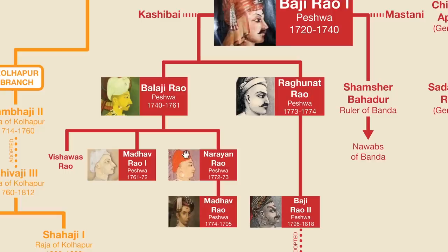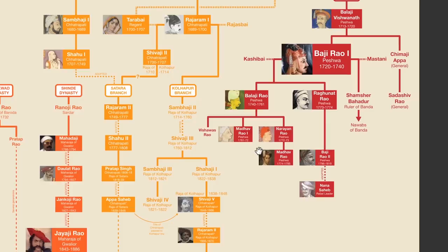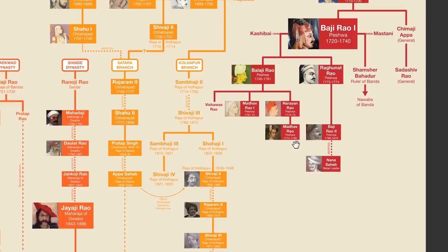Madhav Rao was followed by his brother Narayan Rao, who was then assassinated by his uncle Raghunath Rao. But Narayan Rao's wife was pregnant at the time, and when she gave birth to a son named Madhav Rao, that son was named the new Peshwa. So you ended up with regents ruling on behalf of a ceremonial ruler who was in turn ruling on behalf of another ceremonial ruler, Chhatrapati Rajaram II. Under the young Peshwa Madhav Rao, the individual Maratha states became more and more independent, and India started to fragment again. This was made worse by the increasing involvement of European powers on the subcontinent, particularly the British. The first Anglo-Maratha war occurred during Madhav Rao's tenure, with the Marathas coming out victorious. But there was a second and a third Anglo-Maratha war during the tenure of the next and final Peshwa, Raghunath Rao's son Baji Rao II. The British won both of these wars, and in 1818, the Maratha Empire ceased to exist.